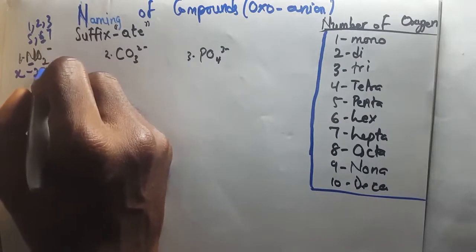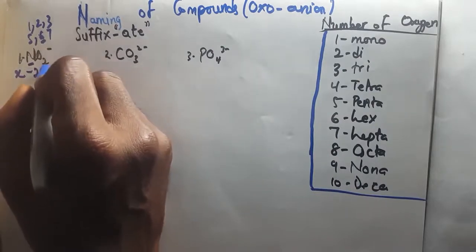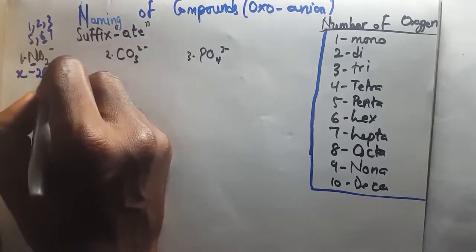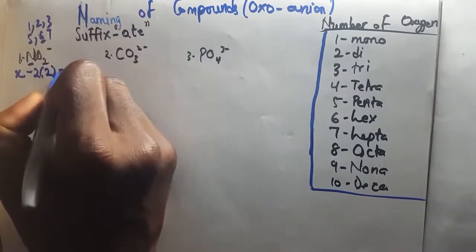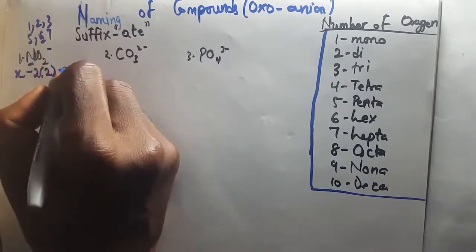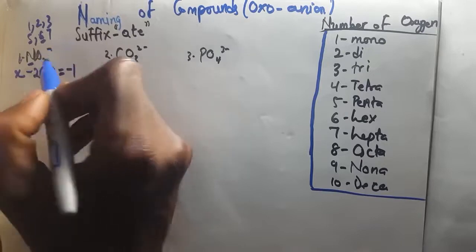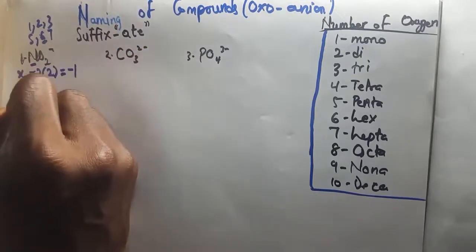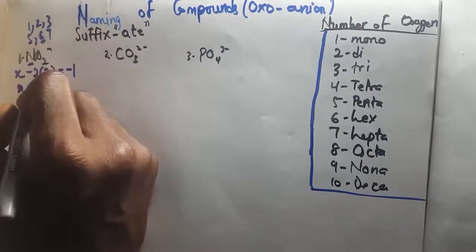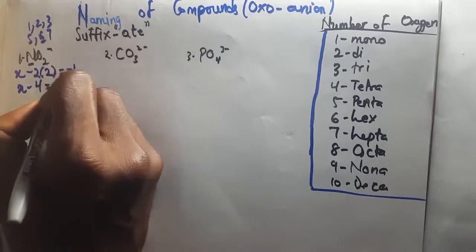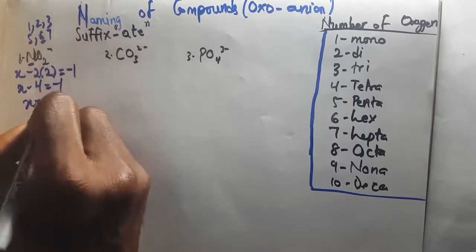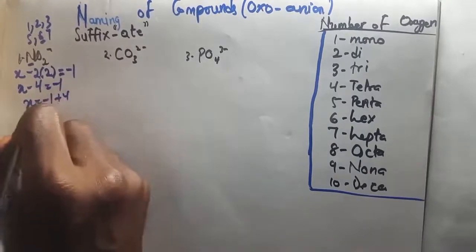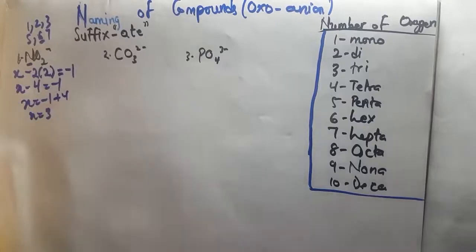After writing the charge, the next thing you write is the number of atoms of oxygen you have. So: X plus (−2 × 2) equals the charge of the whole compound, which is negative 1. So X minus 4 equals minus 1. Therefore X equals minus 1 plus 4, so X equals 3. We have the oxidation number now. The next thing to do is to name — apply the rules we have.